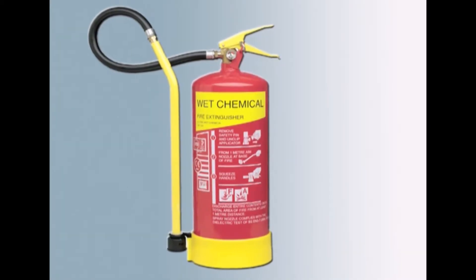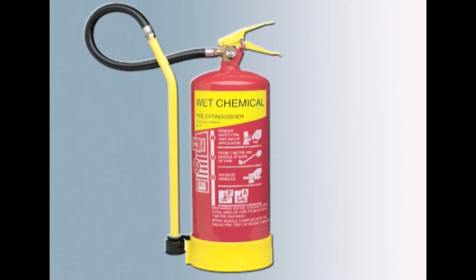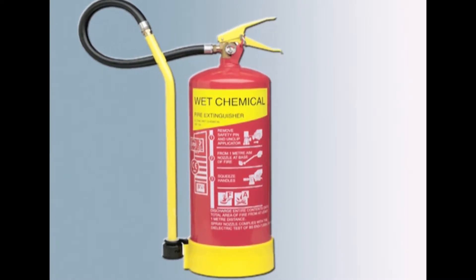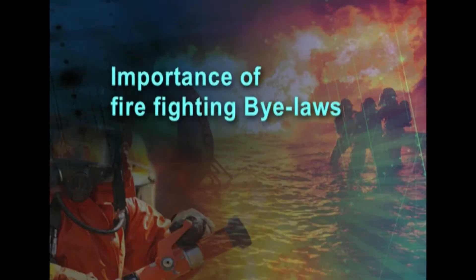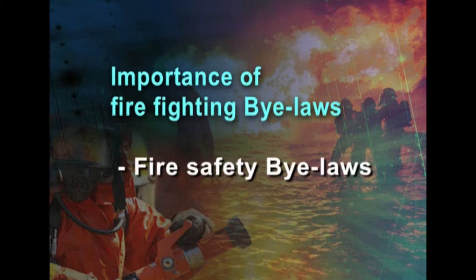Graphite-based powders can be used on lithium fires and high-melting metals such as zirconium and titanium. The next extinguisher type is wet chemical, which is a specialist extinguisher for class F fires. Now let us move to the importance of firefighting bylaws. What is the significance of firefighting bylaws? The first area is fire safety bylaws.